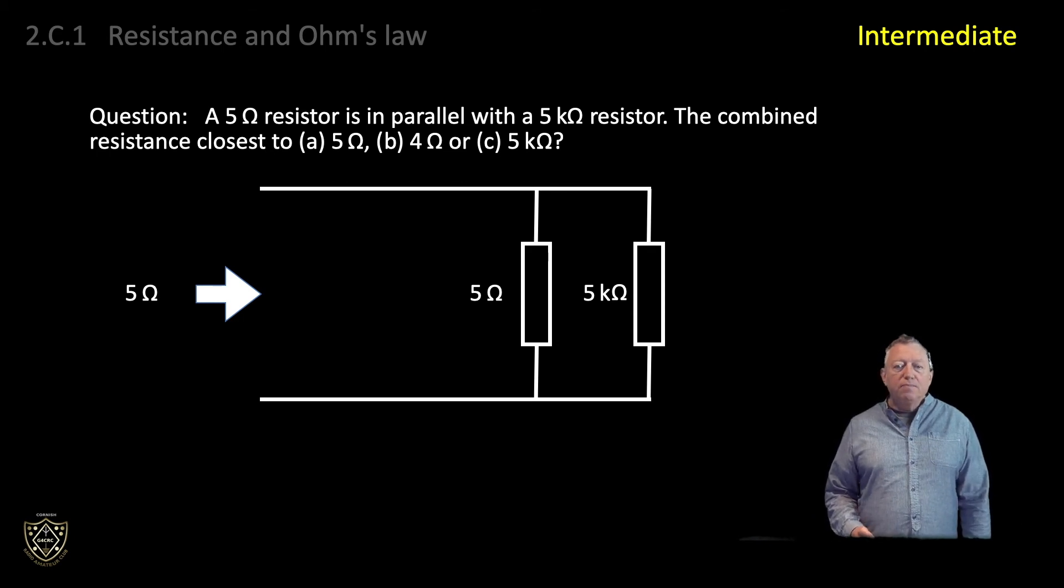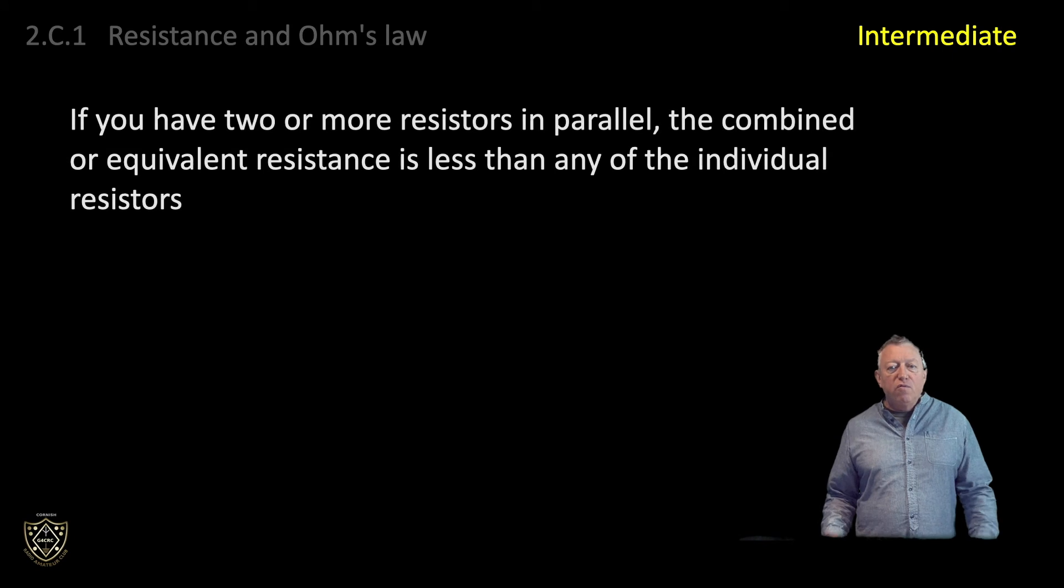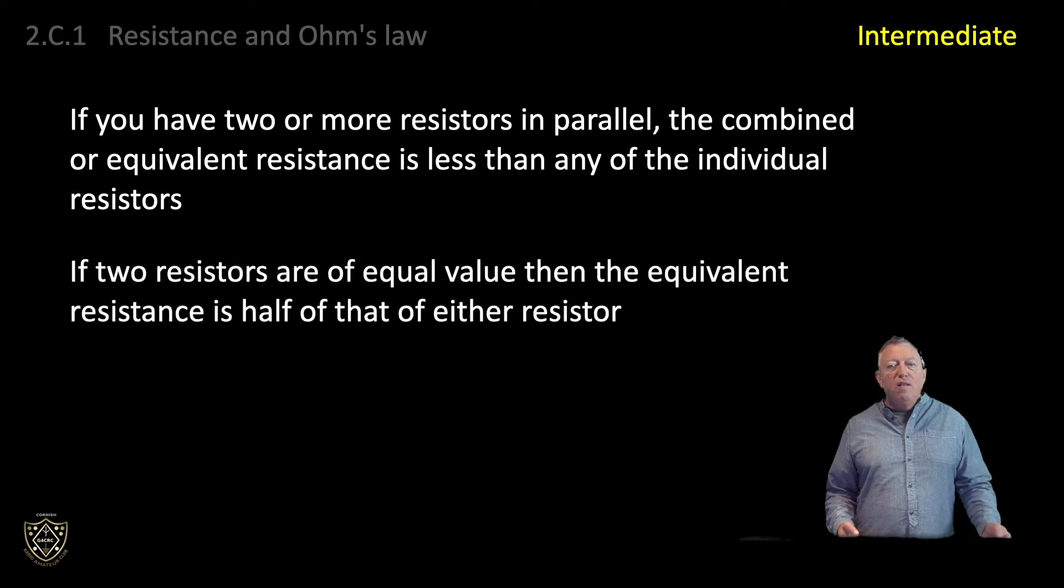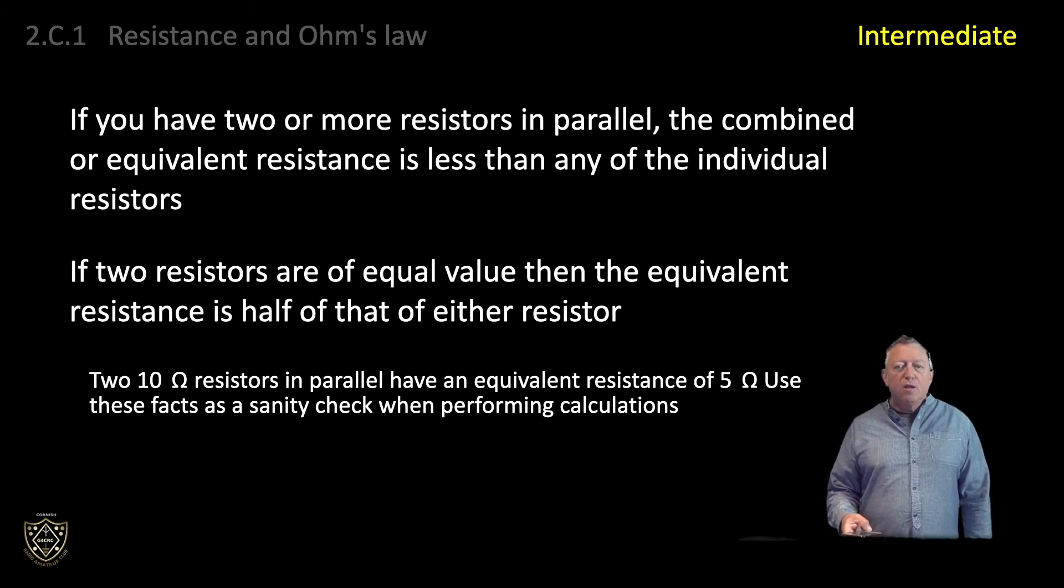So, summarising, if you have two or more resistors in parallel, the combined or equivalent resistance is less than any of the individual resistors. If two resistors are of equal value, then the equivalent resistance is half of that of either resistor. Two 10 ohm resistors in parallel have an equivalent resistance of 5 ohms. Use these facts to estimate and as a sanity check when performing calculations.